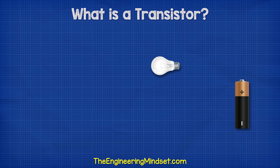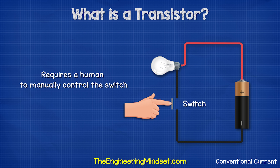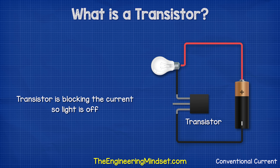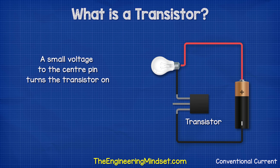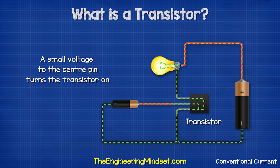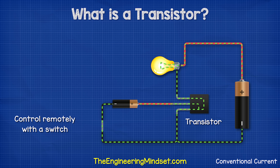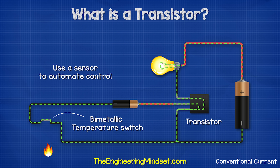If we connect a light bulb to a battery, it will illuminate. We can install a switch into the circuit and control the light by interrupting the power supply, but this requires a human to manually control the switch. To automate this, we use a transistor. The transistor blocks the flow of current, so the light is off. But if we provide a small voltage to the base pin in the middle, it causes the transistor to start allowing current to flow in the main circuit, so the light turns on. We can place a switch on the controlling pin to operate it remotely, or place a sensor on it to automate the control.